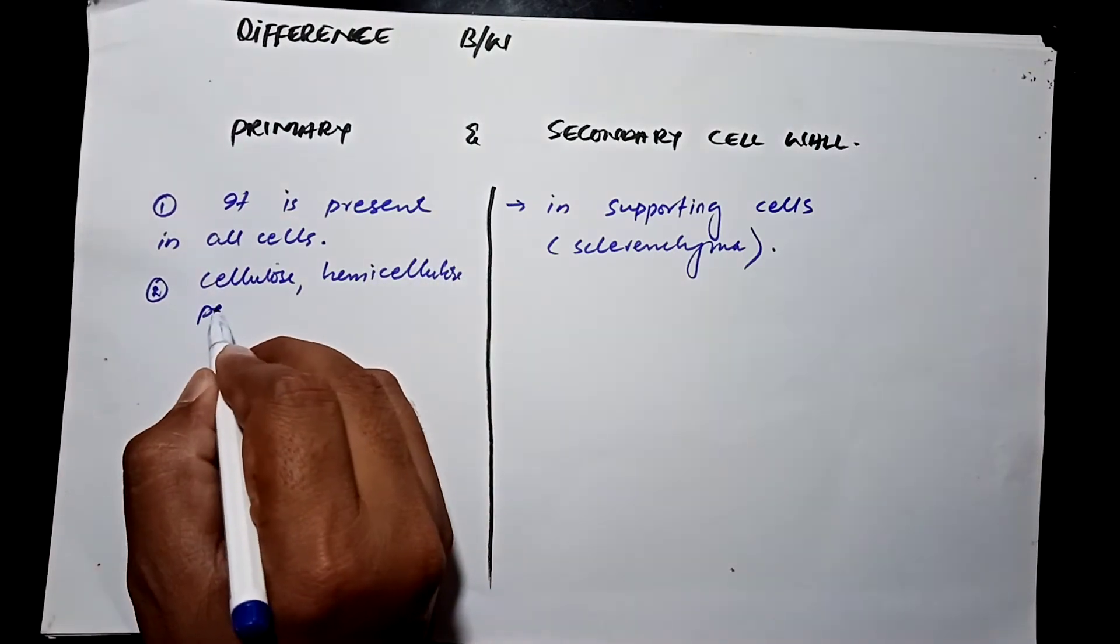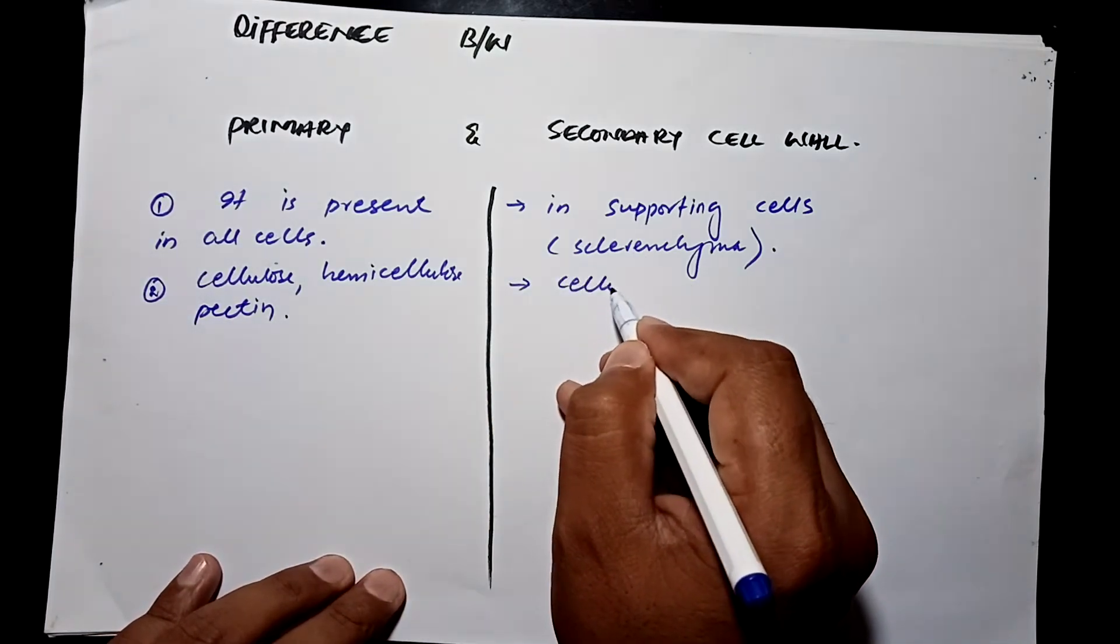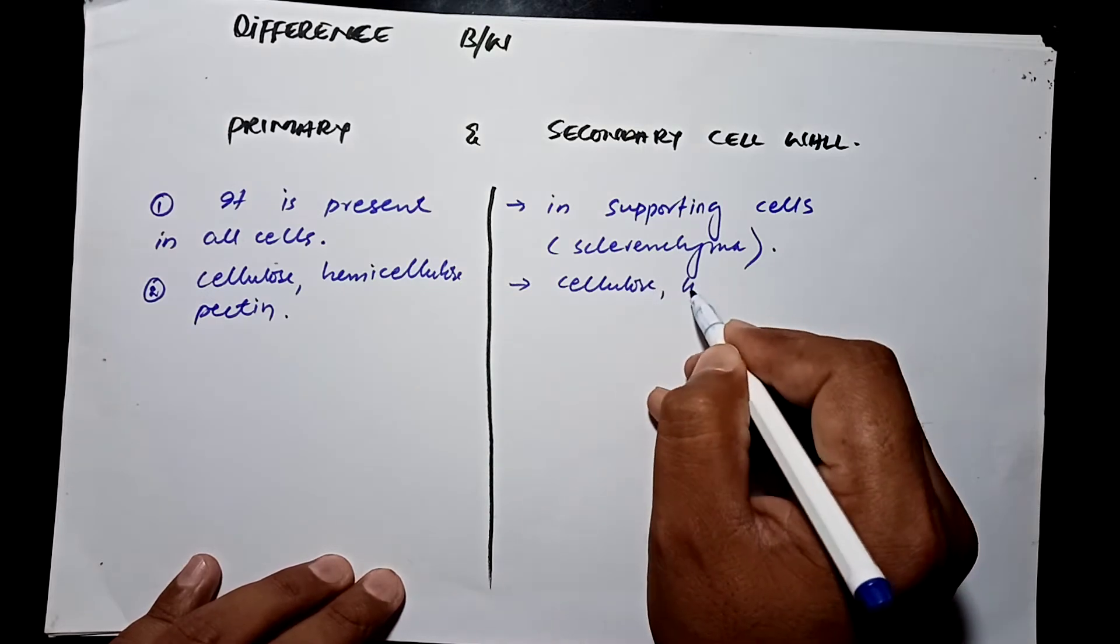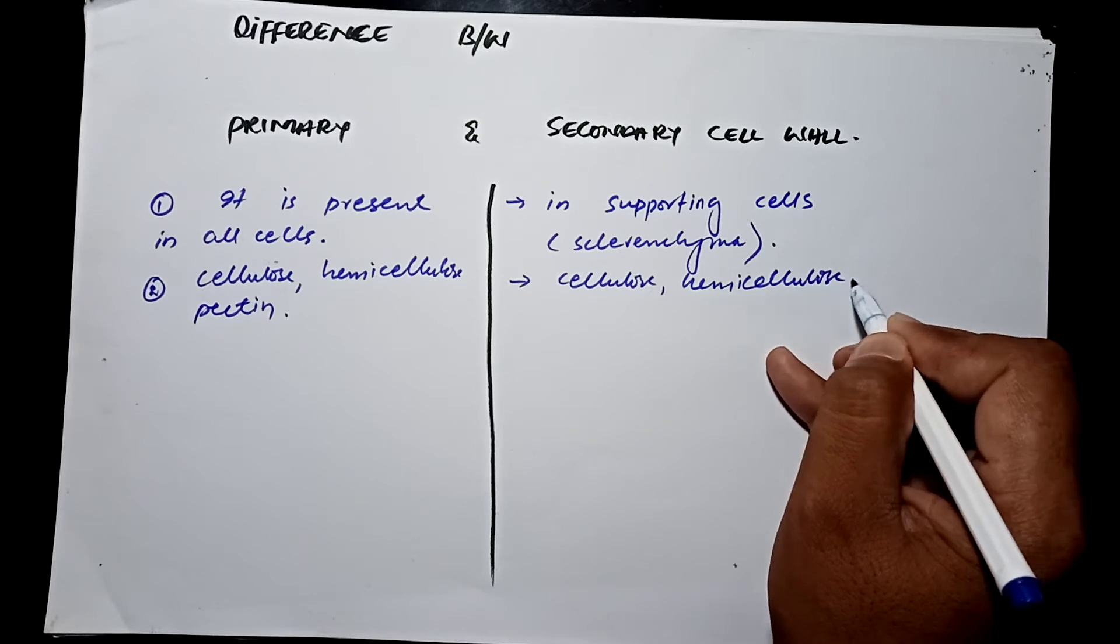Secondary cell wall is made up of cellulose as well as hemicellulose, lignin, and less inorganic salts.